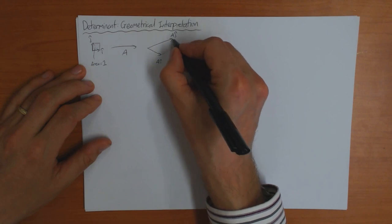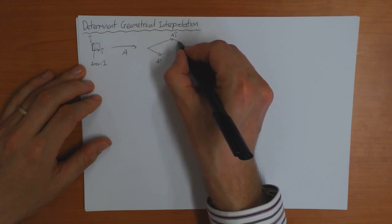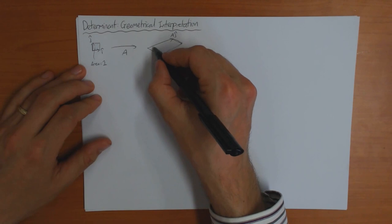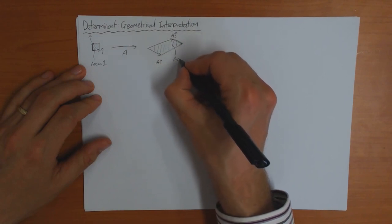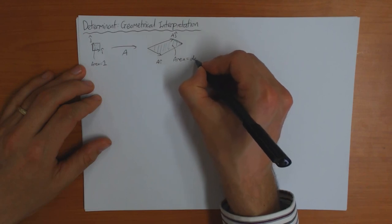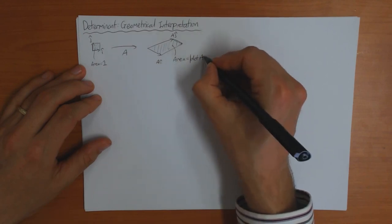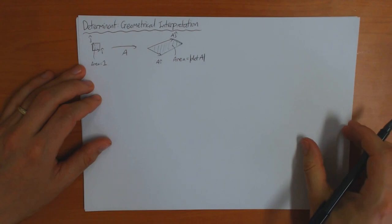And if you form the shape in the same way, which is now a parallelogram like this, then the area of this shape is going to be equal to the determinant of A, or at least the absolute value of the determinant of A.